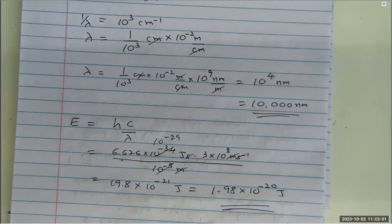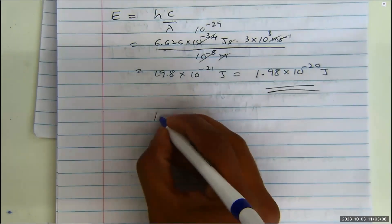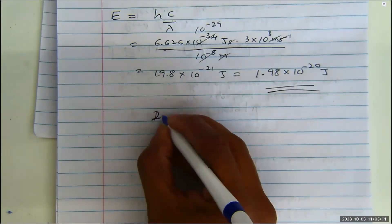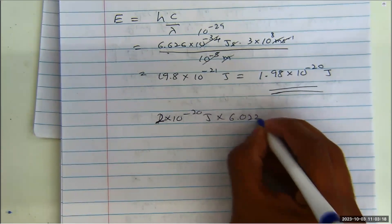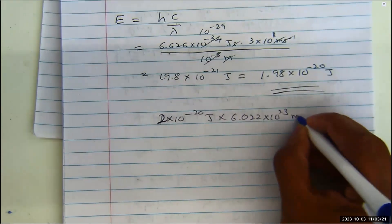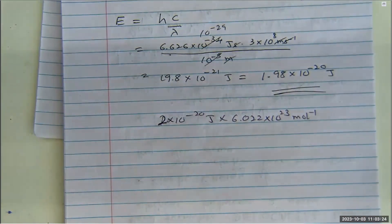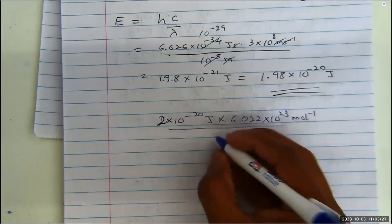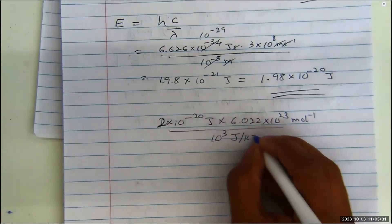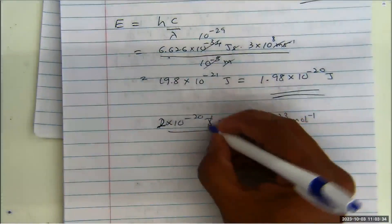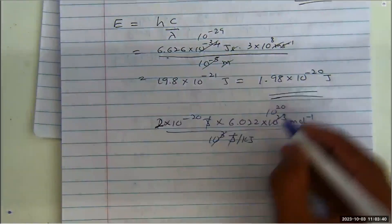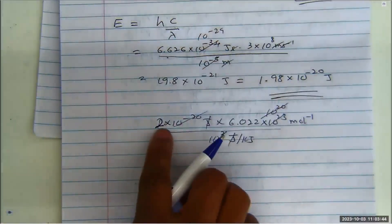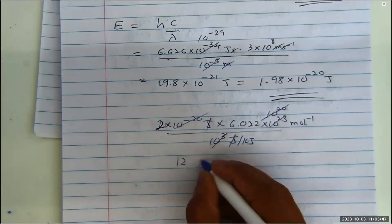Let's do this again more carefully. Here's the energy of one photon: 1.98 × 10^-20 joules, multiplied by Avogadro's number, 6.022 × 10^23, which is the number of photons per mole. Then divide by 1000, which is 10^3, because that's how many joules are in a kilojoule. The joules cancel out. 10^3 cancels with 10^23, giving 10^20. That cancels with 10^-20, and we multiply 2 by 6 to get 12 kilojoules per mole.